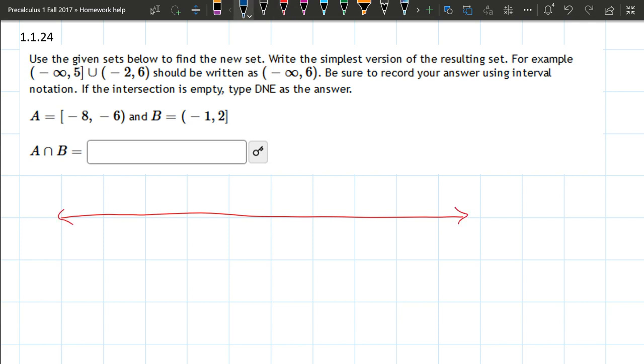I'll just start with A. So A goes from negative 8 to negative 6. We'll say that's negative 8, negative 6. B is negative 1 to positive 2. I'm not counting this out exactly evenly spaced, so we got negative 1 to positive 2.